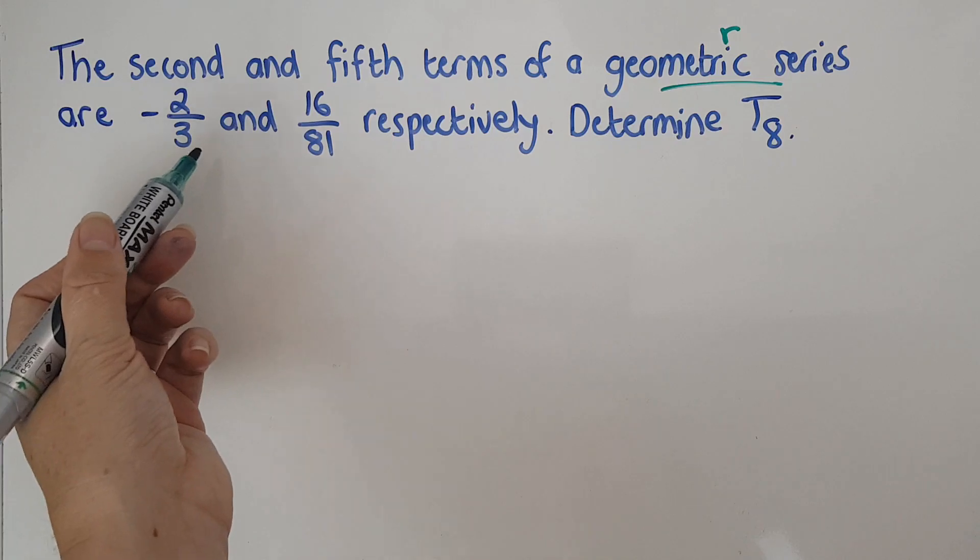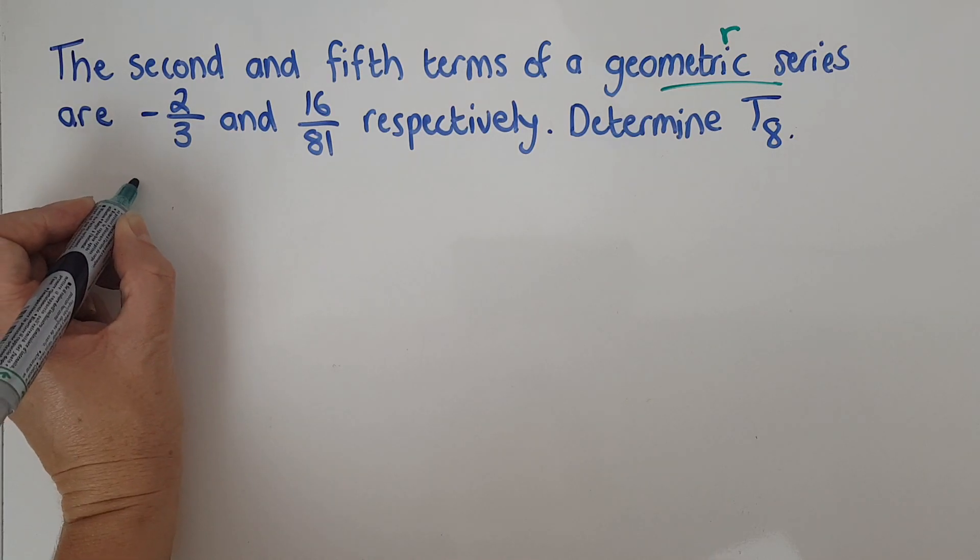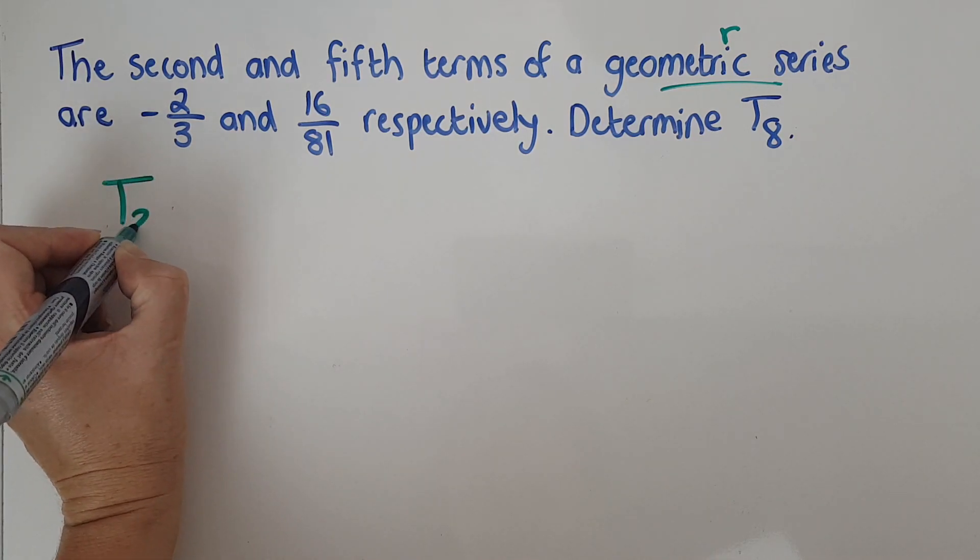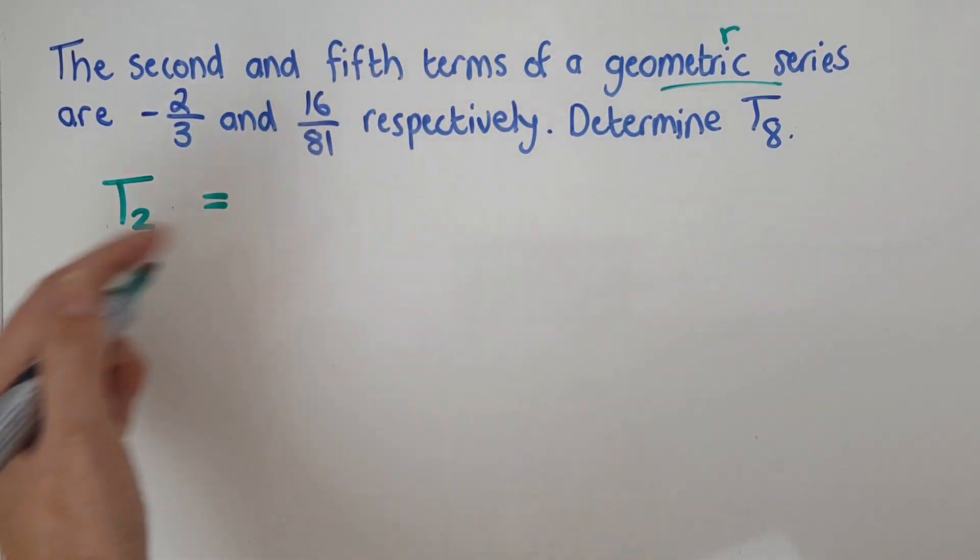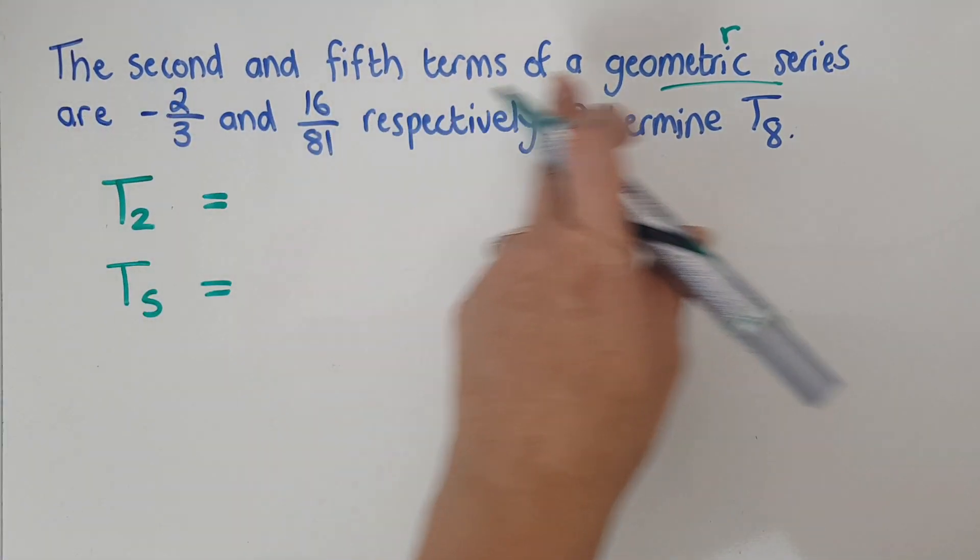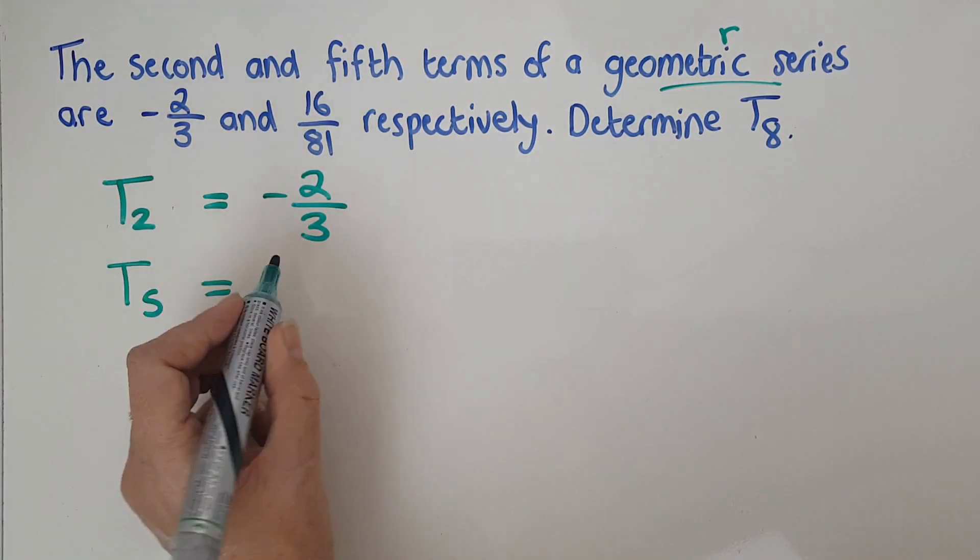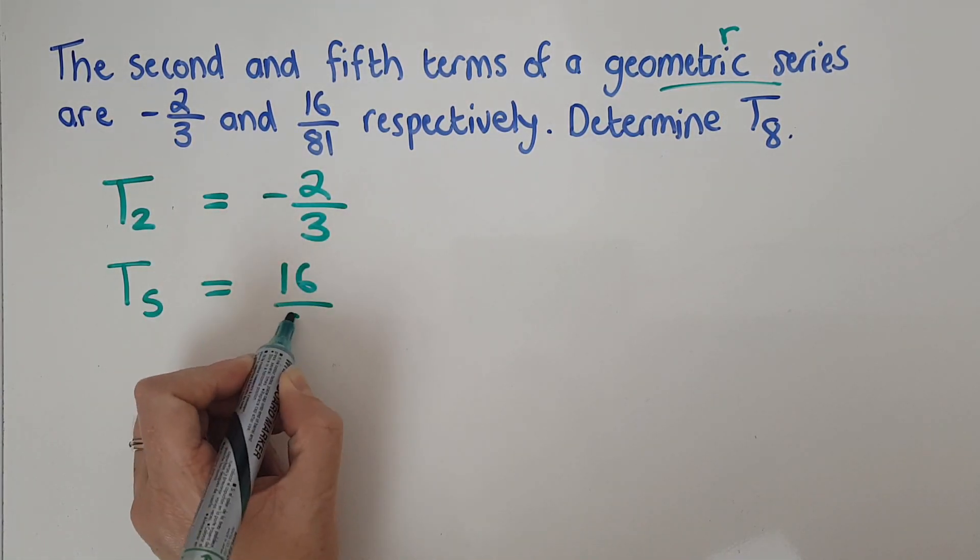So the first mentioned is the first one and the second mentioned is the second one, just for those of you for whom English is a second language. So the second, so T2 is something and the other one they give me is the fifth term, T5. T2 is negative two thirds and T5 is 16 over 81.